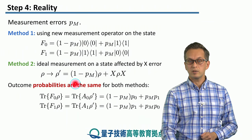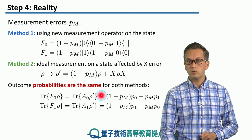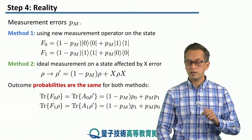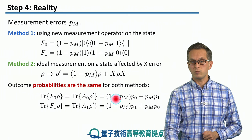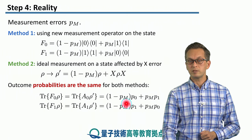And it's given by the following. It's just 1 minus PM times P0. Here P0 is the ideal measurement outcome probability for obtaining state zero.